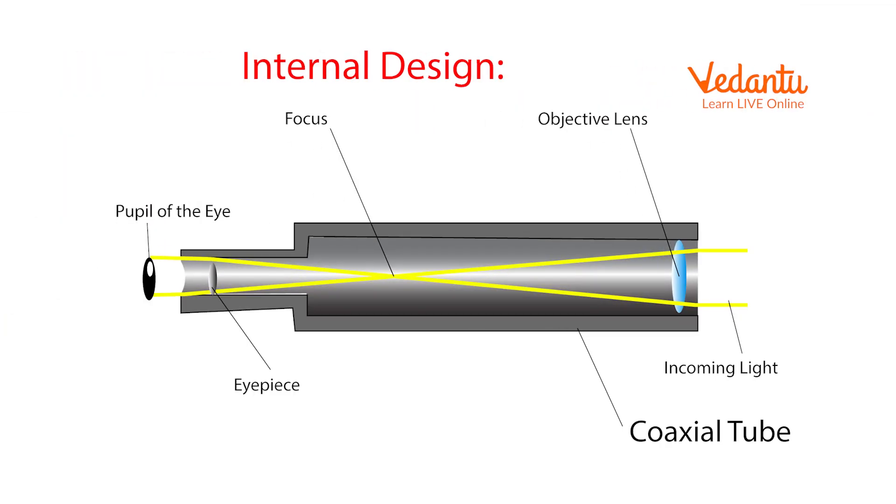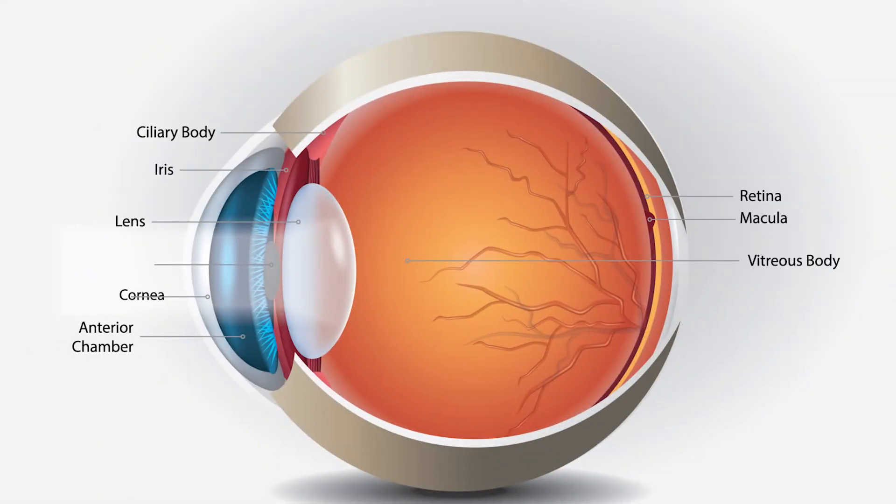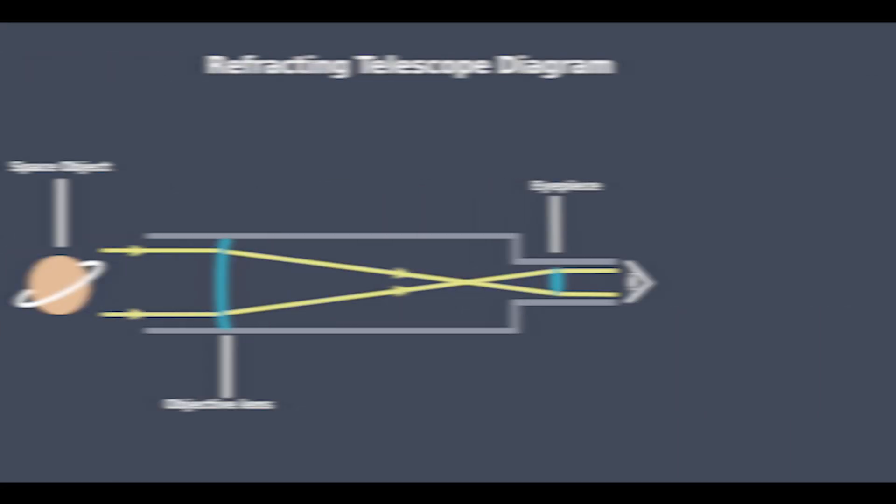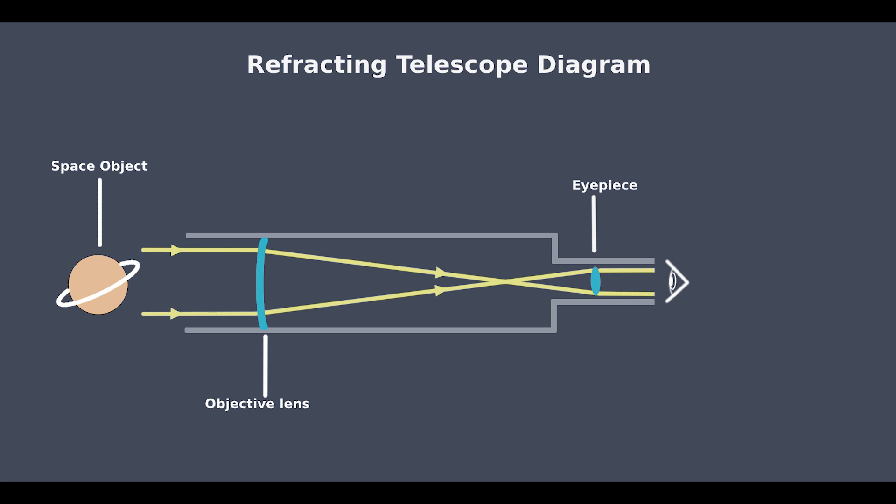Both refracting and reflecting telescopes require regular collimation — the alignment of mirrors. Refractors are much more stable and compact than reflecting telescopes, but both suffer from misalignment issues. Both the human eye and telescopes gather light differently to form images: the cornea and lens of the eye work similarly to a telescope's objective lens, although the eye has just one lens while most telescopes have two — an eyepiece where you place your eye, and an objective lens in the direction of the object.